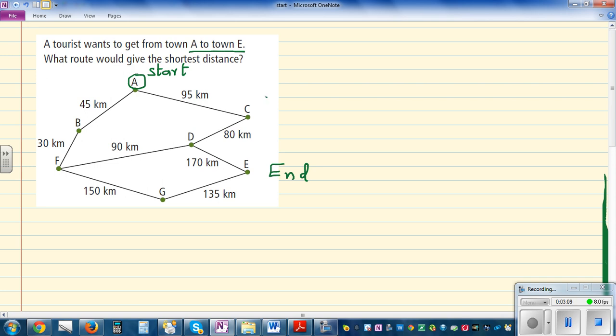From A to C is 95. So you write 95. Start with 0. 95 plus 80 is how much? 90 plus 80 is 170, so it's 175. And from D to E, 170 plus 170 is 340, so this will be 345. That's one option.